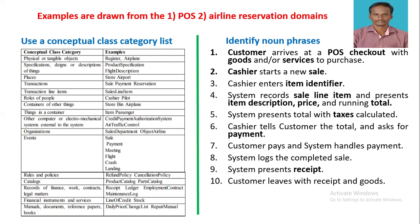To create a domain model, we make a list of candidate conceptual classes. Two examples are considered: POS and airline reservation domains. The first column represents conceptual class categories and the second column represents some examples.